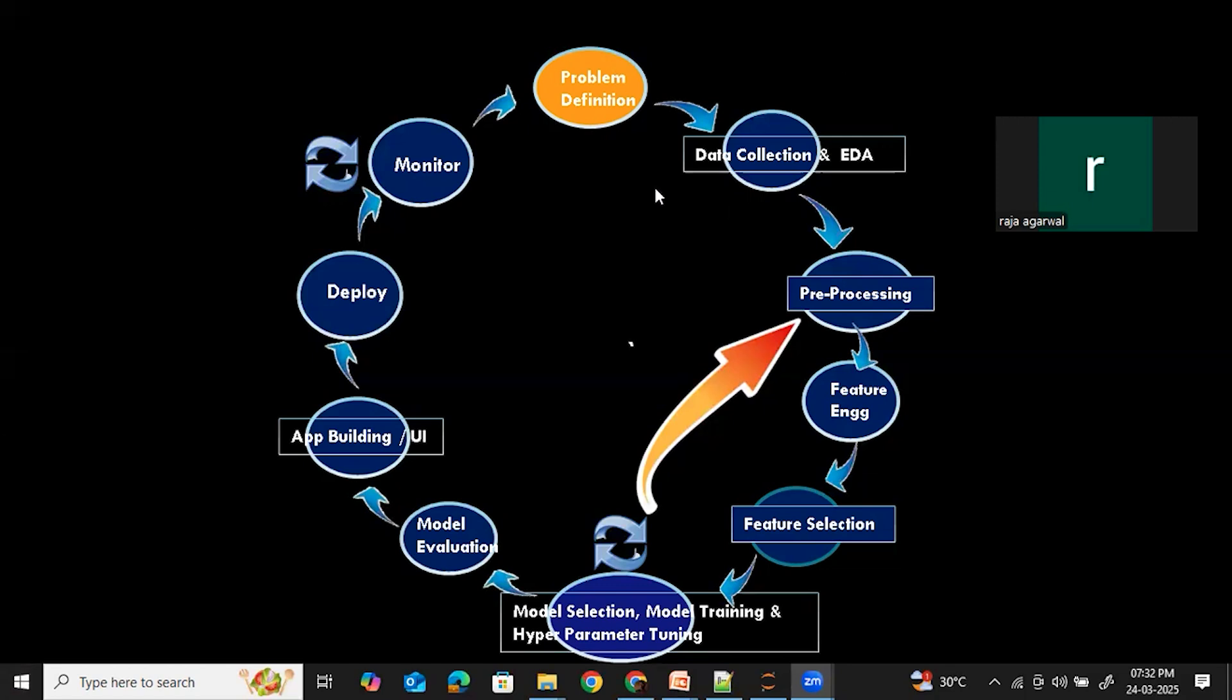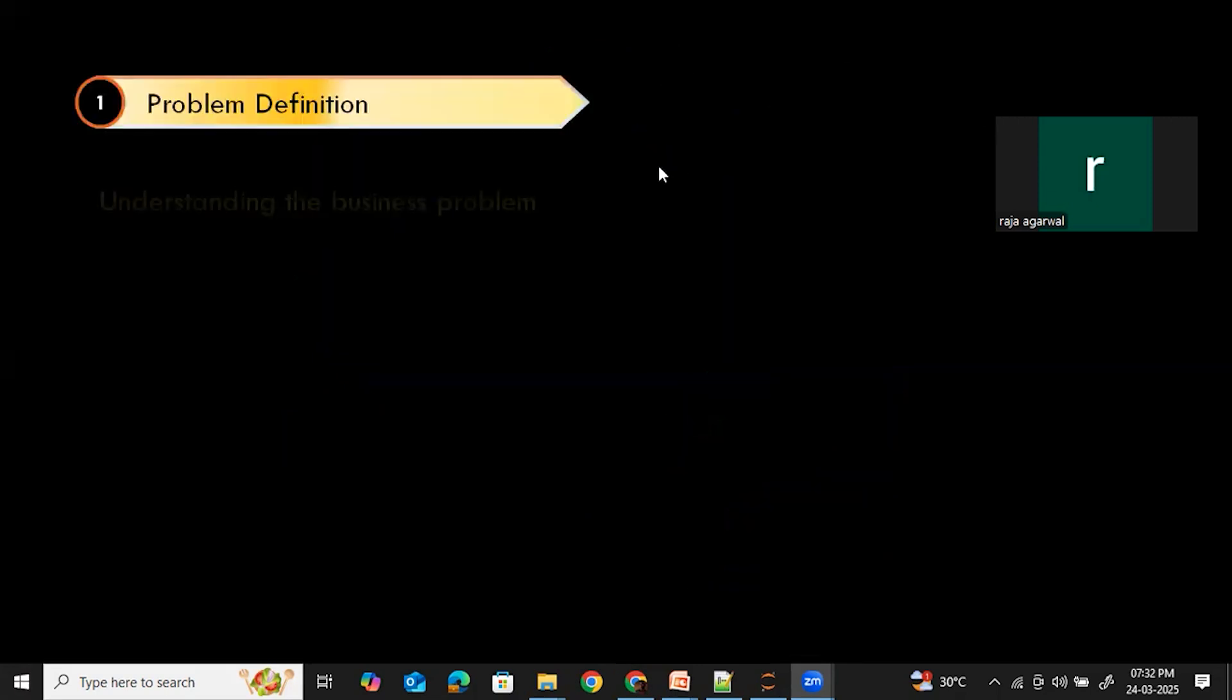So now the question is, what are we going to do in the problem definition stage? First, understand the business problem. Can someone tell me an example for the business problem? Let's say we work for a big retail company and they tell us customers are leaving and we don't know why. Can you help? This is our starting point.